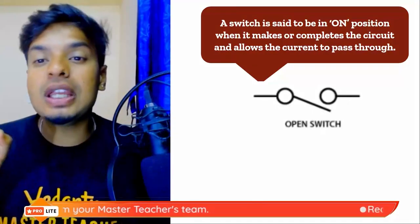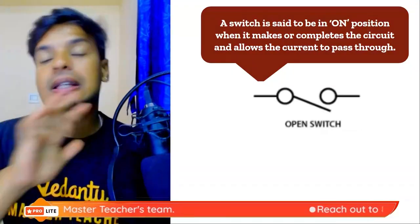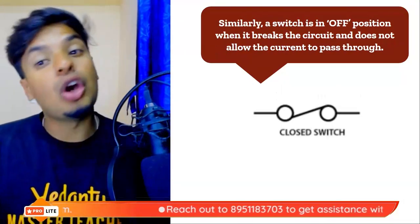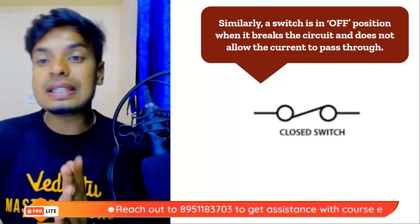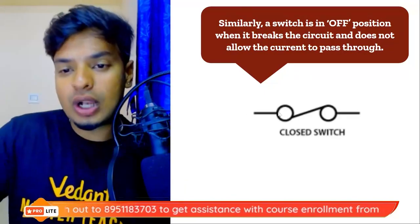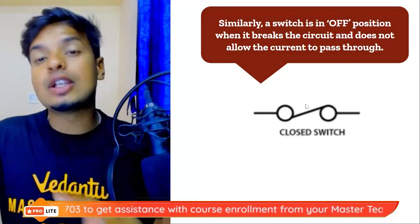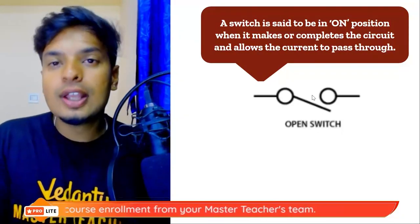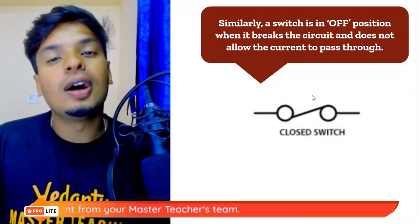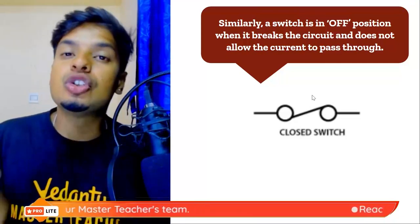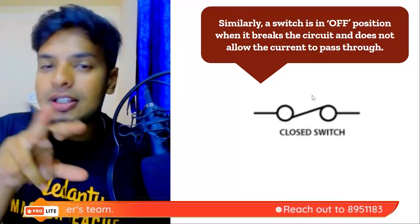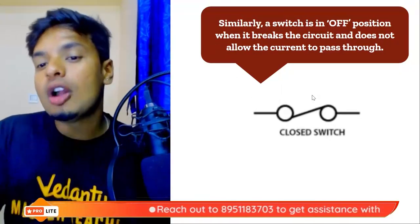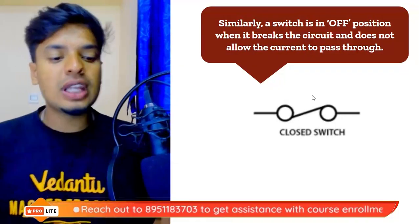A switch is in the ON position when it completes the circuit, allowing electric current to pass through it. A switch is in the OFF position when it breaks the circuit and does not allow electric current to pass through it. What you see on screen is an ON switch and this is an OFF switch. Open switch means the switch is off; closed switch means the switch is on. It's a little bit to remember, so let me draw and show you.